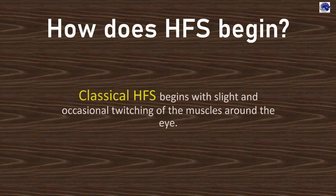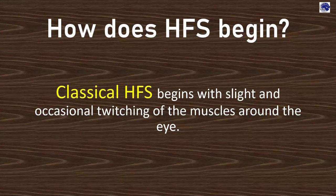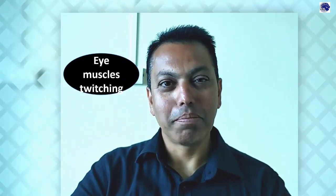How does hemifacial spasm begin? It begins with slight and occasional twitching of the muscles around the eye. This is a patient with classical hemifacial spasm in the early stages of disease where only the eye muscles are involved.